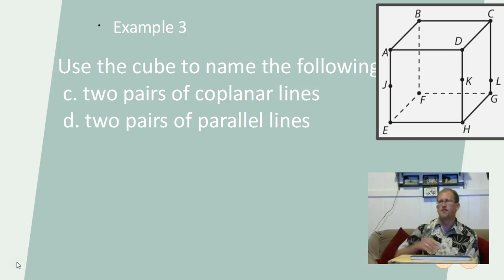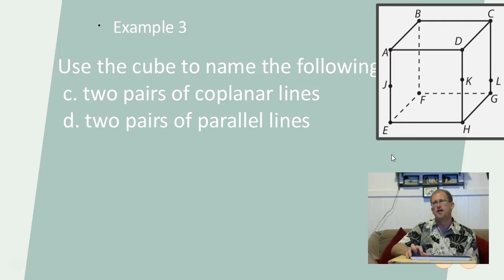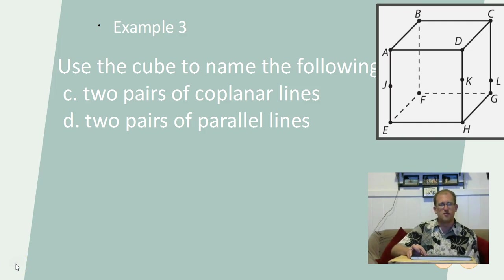Two pairs of coplanar lines from the cube: line EH and line AD are in the same plane — both on one face of the cube, so they're coplanar. Line AE and line EH are both on the plane of that face — also coplanar. Two sets of parallel lines: AD and EH are coplanar and never intersect, so they're parallel. HG and FE are both on the bottom plane of the cube — coplanar and never intersecting, so they're parallel. These are words you've used before in common speech; we're just applying them to their home in geometry.